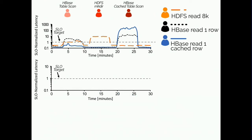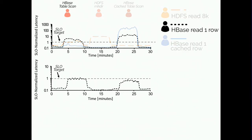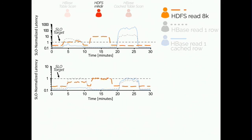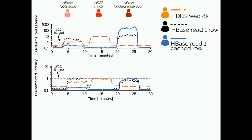We repeat this experiment with Retro enabled running the latency SLO policy. Looking at read one row — the most affected by the table scan — with Retro enabled, its latency still increases but doesn't exceed the SLO target. Similarly, read one cached row is still affected by the cached table scan, but latency stabilizes around the SLO target. Read 8K also remains around the SLO target when the make-directories workflow flares up. Overall, each time a low-priority workflow flares up, the policy identifies the offending workflow and throttles it to maintain the high-priority latencies. The policy does this using only Retro's abstractions, agnostic to the underlying resource implementations and control points.